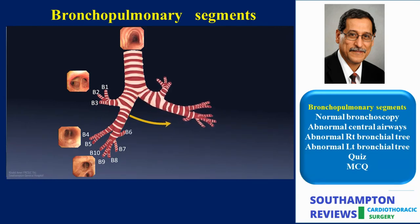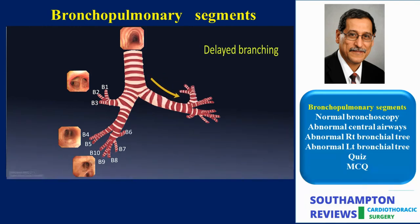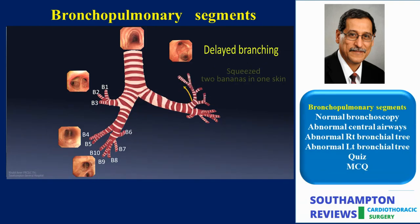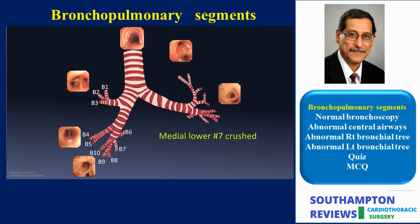Squeezed for space, the bronchi delay their branching to a more distal location. As a result, the left mainstem bronchus is now longer than the right mainstem bronchus, attaining a more horizontal orientation. Unlike the right upper lobe, which divides into three branches, we note only two divisions in the trisegment or the left upper division. One of the divisions has two bananas in one skin — the so-called apicoposterior division. The third division is the anterior segmental bronchus. The hostile effect of the heart going into the left chest results in the left lung losing one segment and one fissure, with two lobes fused into one.